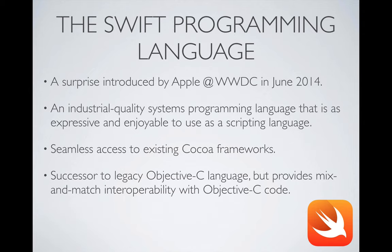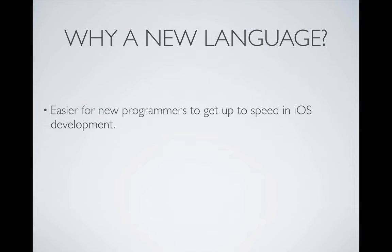Swift is the successor to Objective-C, which was up until recently the native language of choice on Apple platforms. Swift provides mix and match interoperability with Objective-C code, so we can actually write an iOS application that has some components written in Swift and others written in Objective-C. Apple created a new language because Swift makes it easier for less experienced programmers to get up to speed in iOS development.